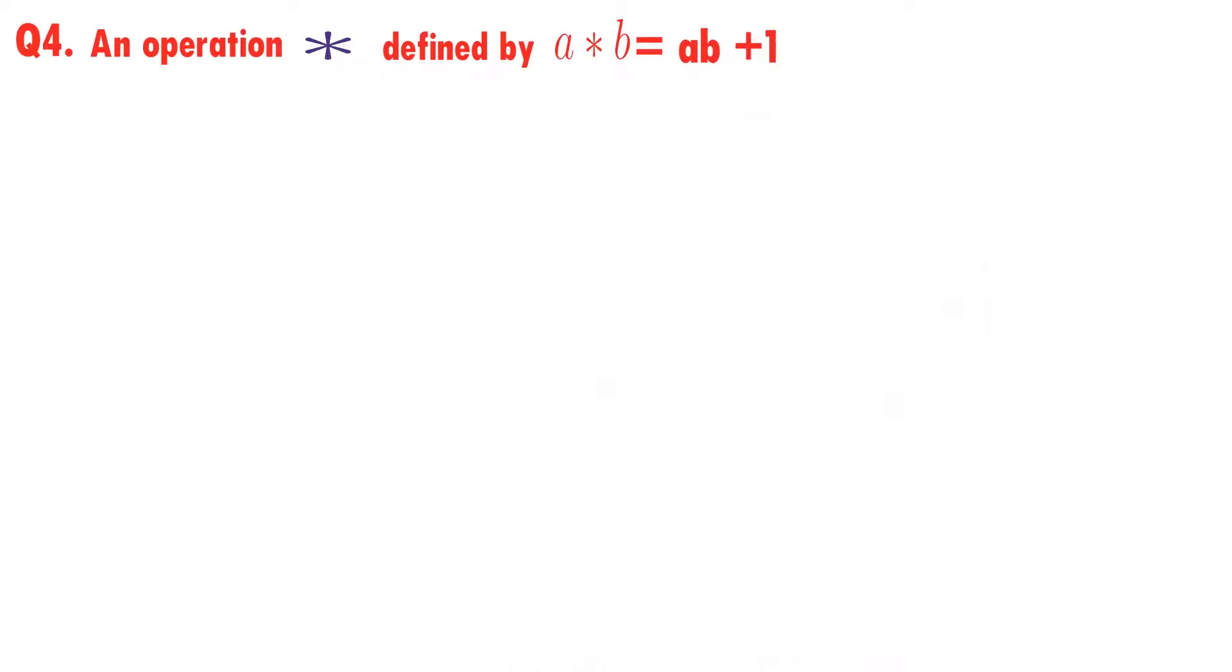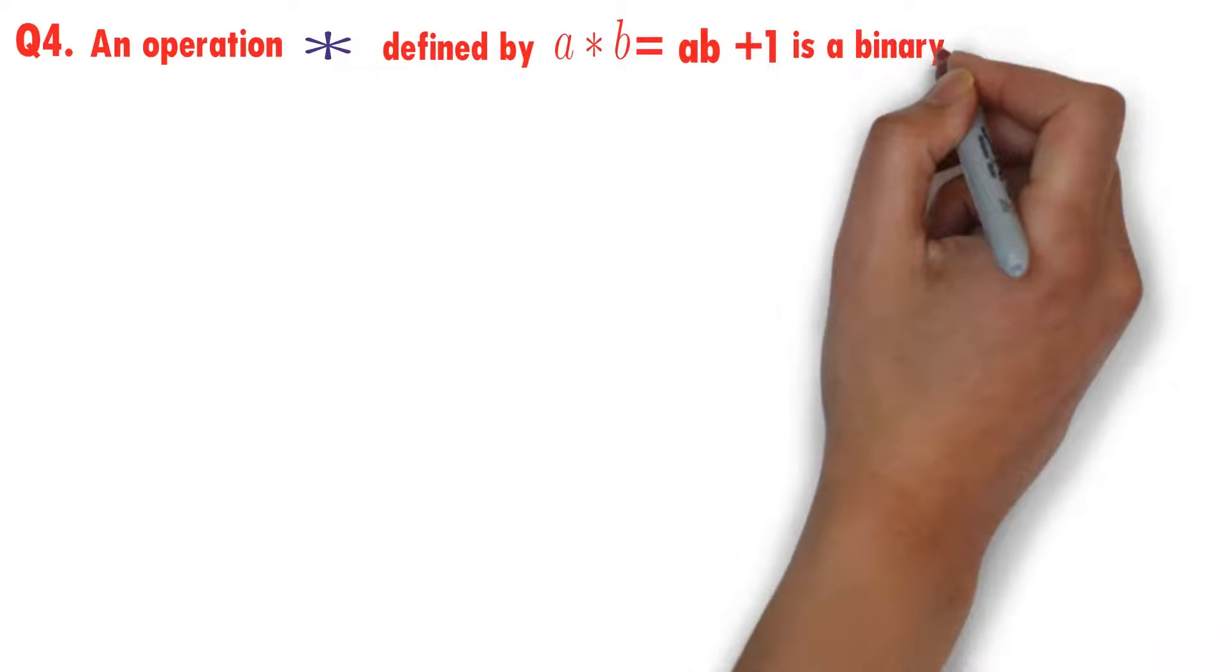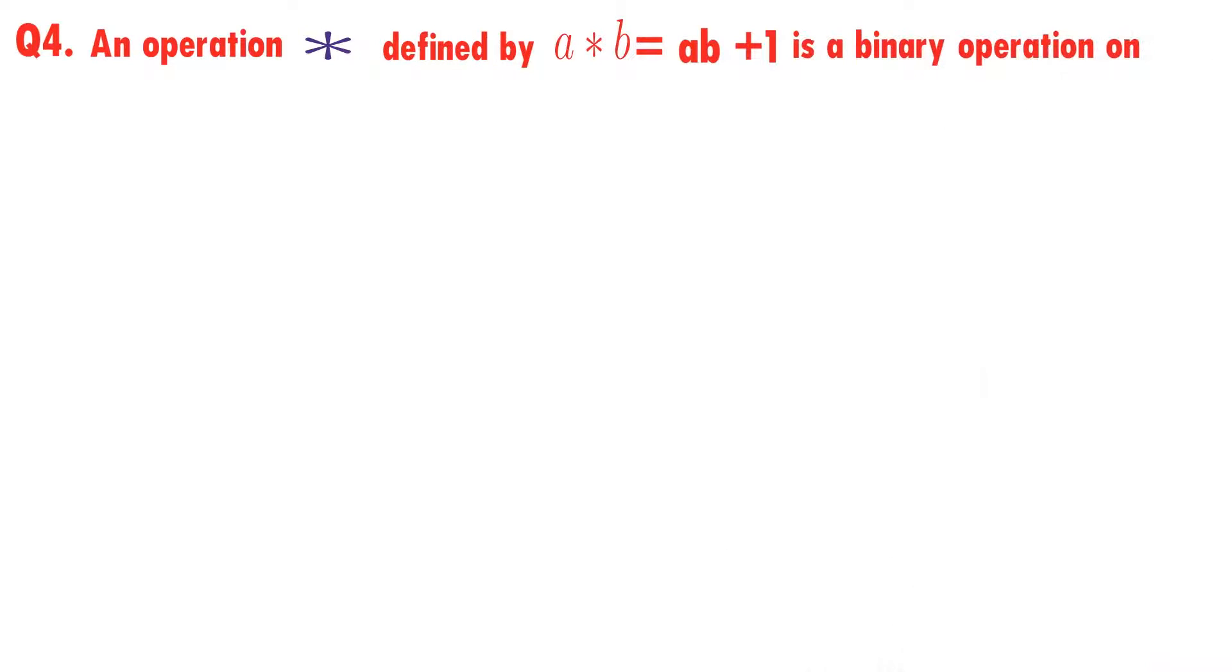* b equals ab + 1 is a binary operation on the set of real numbers. We need to check whether * is a binary operation on the set of real numbers or not.